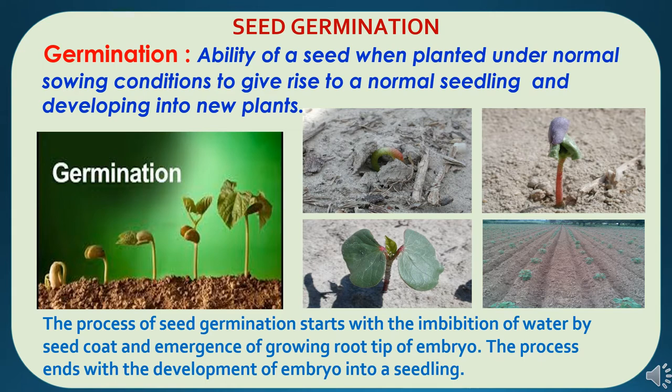First we will study about seed germination. What is germination? It is the ability of a seed, when planted under normal sowing conditions, to give rise to a normal seedling and develop into a new plant. The process of seed germination starts with imbibition — absorption of water by the seed coat — and emergence of the growing root tip of the embryo.